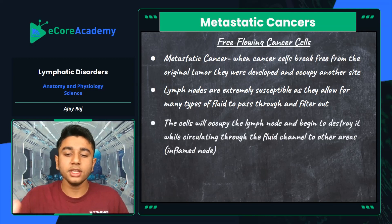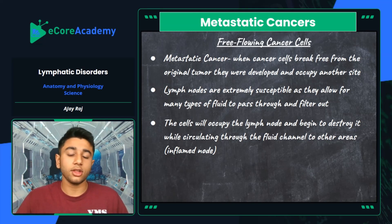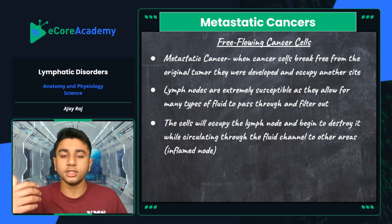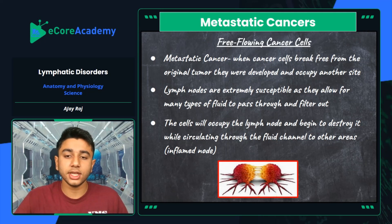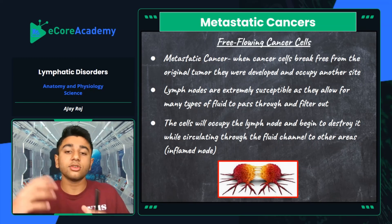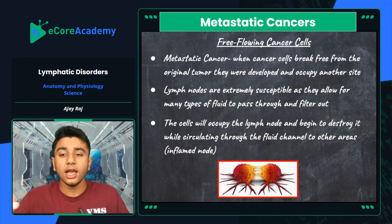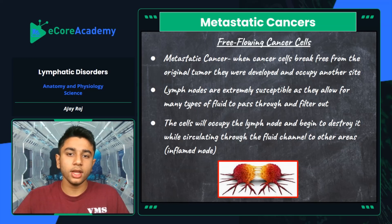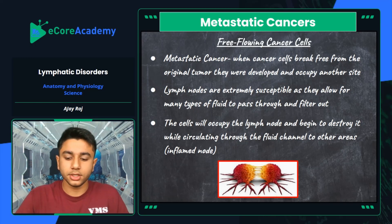When free-flowing cancer cells occupy the fluid being filtered, they then occupy the lymph node itself and begin to destroy it while circulating through fluid channels to other areas. This causes the node to become inflamed and deteriorate, potentially resulting in a burst, rupture, or extreme swelling. Symptoms include fever, anorexia, weight loss, and general cancer symptoms. Once cancer cells break off to another site they begin to reproduce, taking over other cells — making early detection critical to improving survival likelihood.